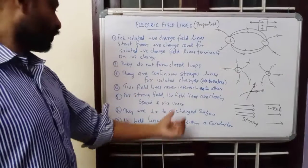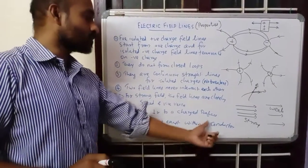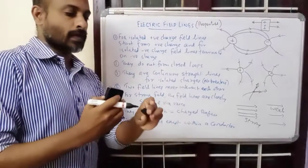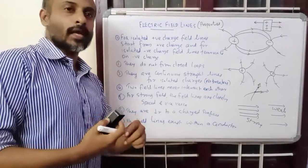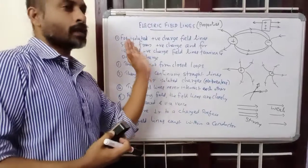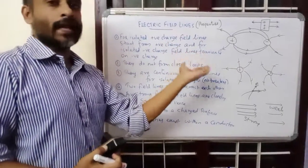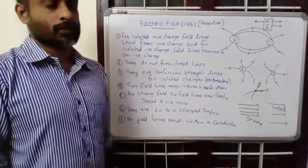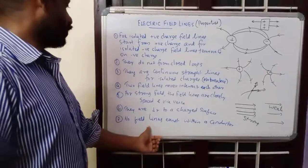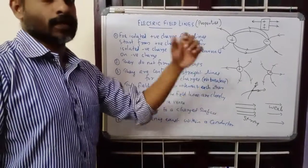One more property: no field lines exist within a conductor. Field lines cannot pass through a conductor — they will terminate at the surface of the conductor and cannot enter inside. So no field lines exist within a conductor.